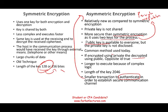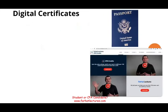To summarize: asymmetric uses a public and private key — they are different from each other. Symmetric uses the same key for both sender and receiver — those keys are identical. The private key in asymmetric encryption is indeed private.